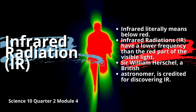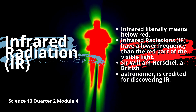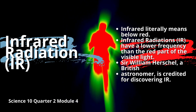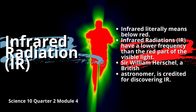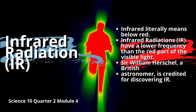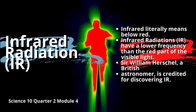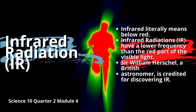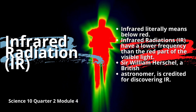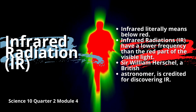Infrared literally means below red. Infrared radiations, or IR, have a lower frequency than the red part of the visible light. Sir William Herschel, a British astronomer, is credited for discovering IR. We do not see infrared radiation but we feel it as heat. In this module, you will learn how infrared can be used in communication.